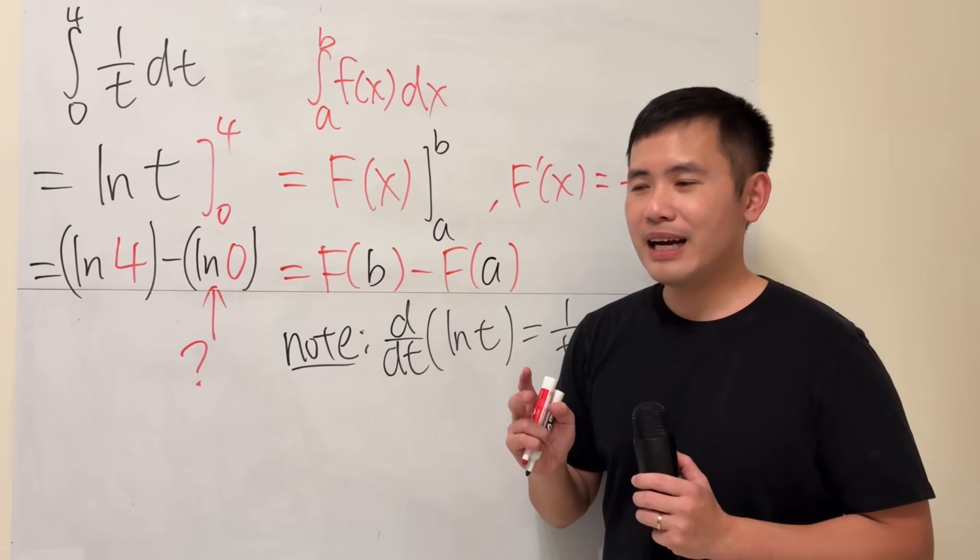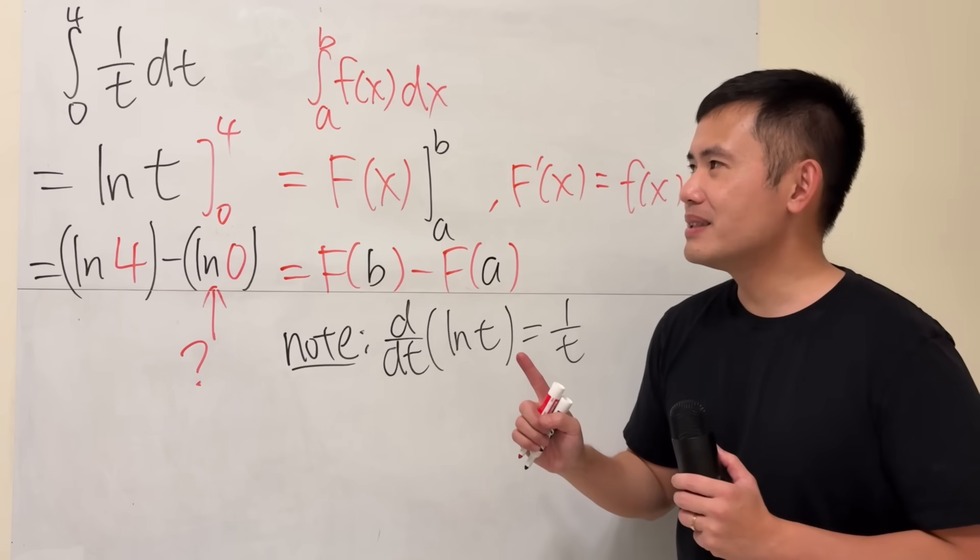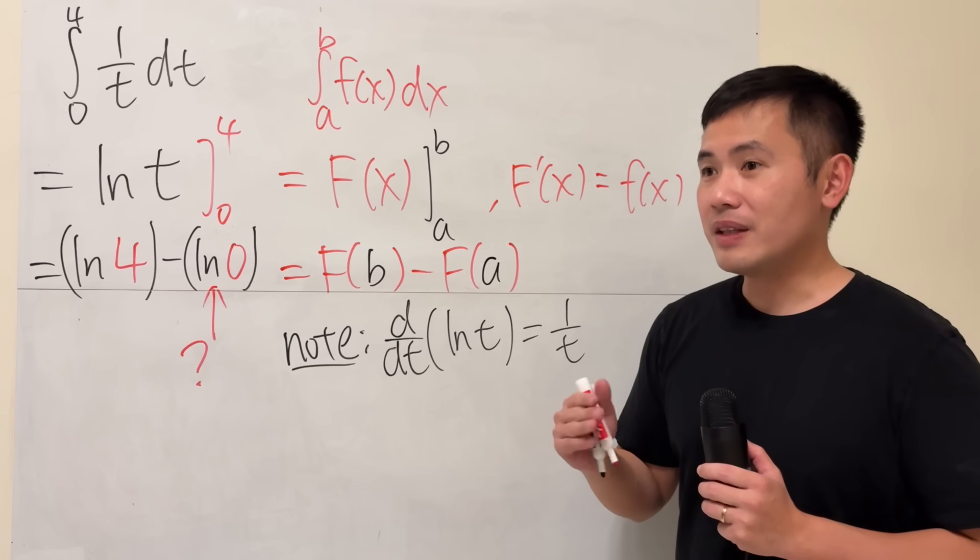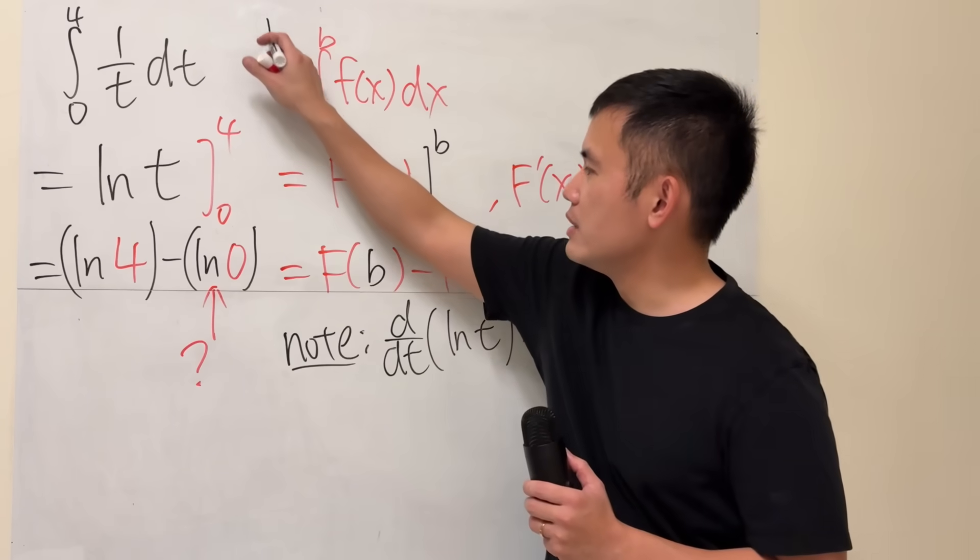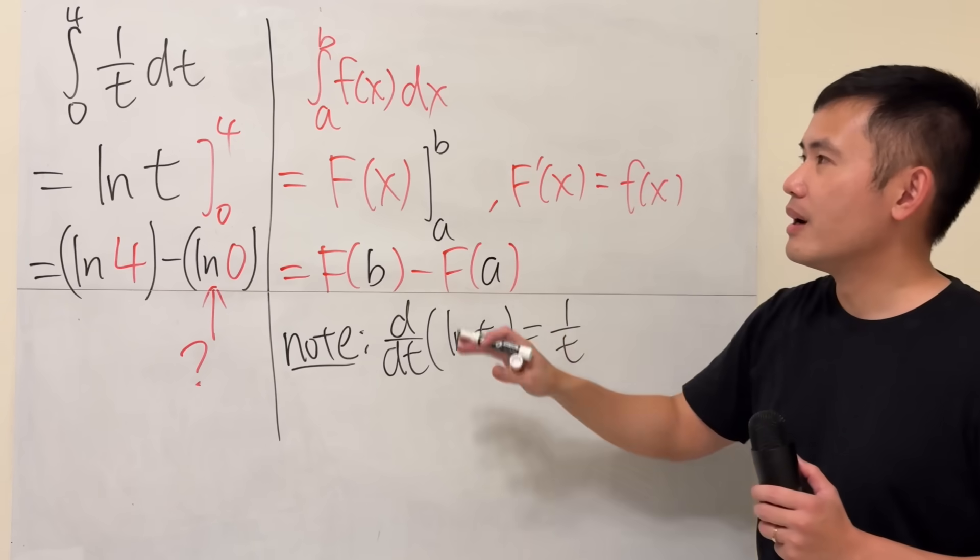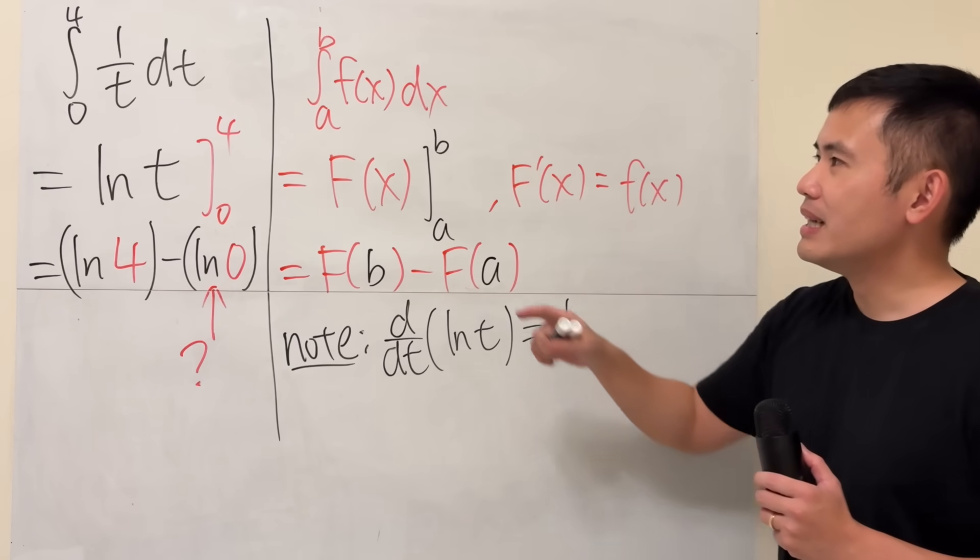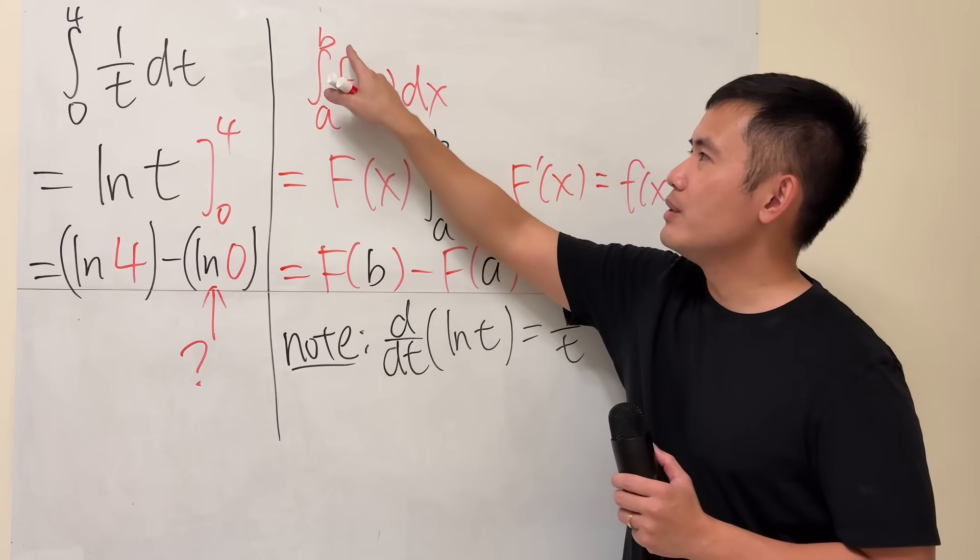Now, I have two things in mind. One is either the question was bad, because if you're just doing the fundamental theorem of calculus part 2, there is a condition of using this right here. In order for this to work out nicely, you have to make sure that f is continuous on the interval a to b.